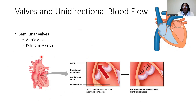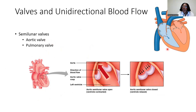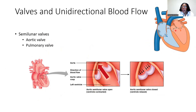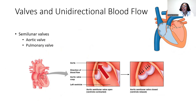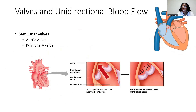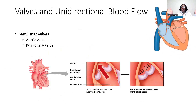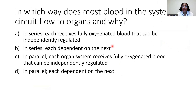The semilunar valves are the aortic and pulmonary valves. The aortic valve helps blood to go from the left ventricle out into the aorta and into the systemic vascular circulation. The pulmonary valve on the right side of the heart helps blood to go from the right ventricle out into the pulmonary artery and then out into the lungs. These are our semilunar valves.